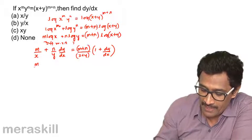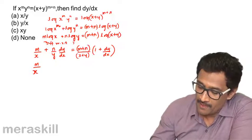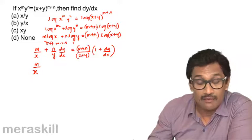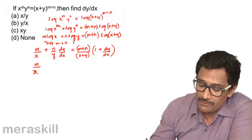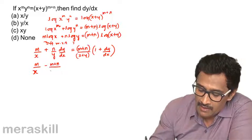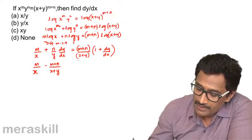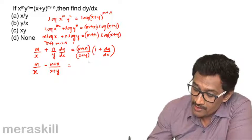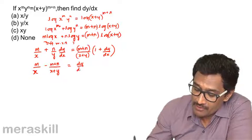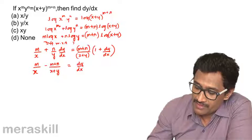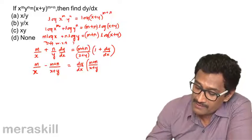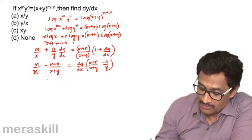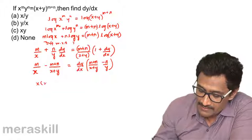Now rearrange terms. We have m/x on the left, and (m+n)/(x+y) on the right. Bring (m+n)/(x+y) to the left side. Then collect dy/dx terms: dy/dx · [(m+n)/(x+y) - n/y] on one side.